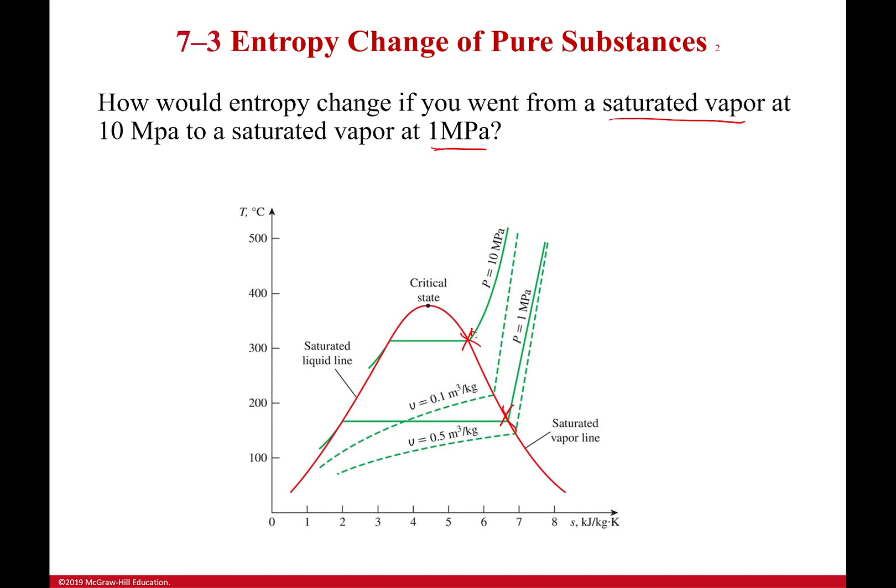So this is the same state, my quality is one. What you see here is I go from one to the other, my entropy is increasing. So I can have the same quality but different entropies at different pressures. Don't let that confuse you. It's not a huge deal. Just know that I can have a liquid vapor mixture that has the same entropy as a vapor mixture at different pressures.